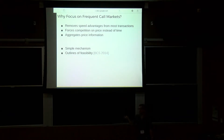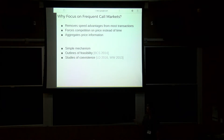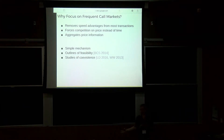Second, there's a paper by Budish, Cramton, and Shim that outlines how these markets would already be implemented in our current financial system and how they would comply with modern financial regulations. There are also studies that have looked at how they would coexist and how you would get agents to migrate from current continuous exchanges to new batched exchanges.